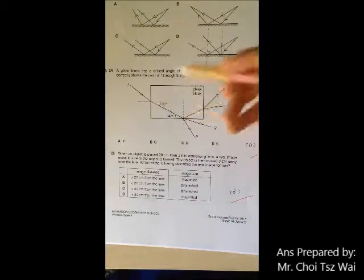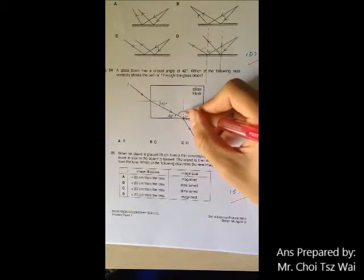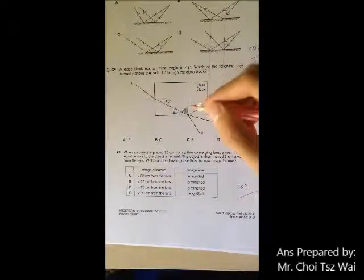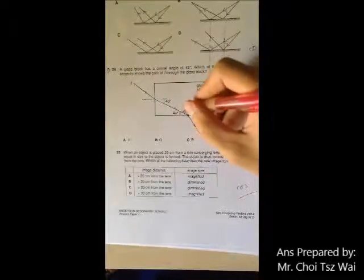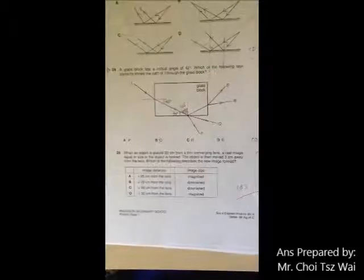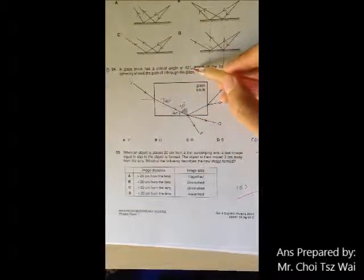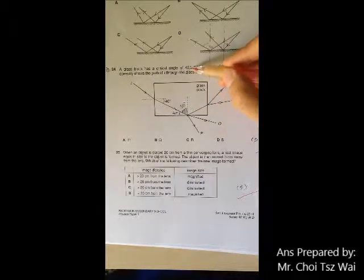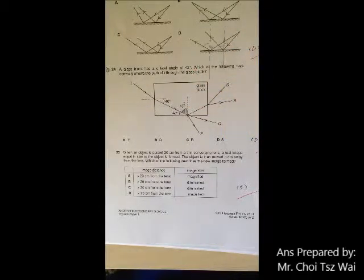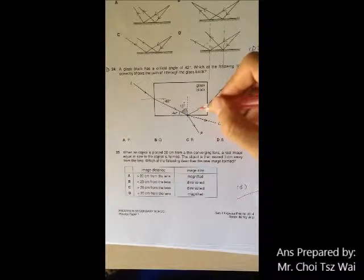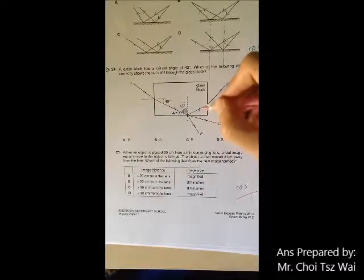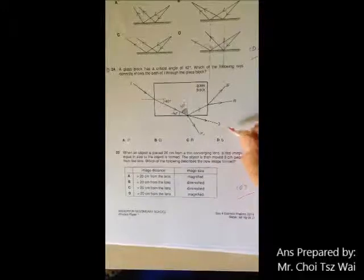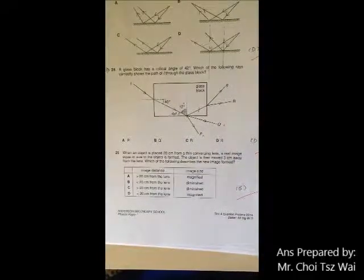The angle of incidence for this point would be from the ray to the normal. So in this case, the angle of incidence is 50 degrees, and definitely it is larger than your critical angle. So when the angle of incidence is larger than critical angle, total internal reflection will occur. So the light ray will actually go to this path. So P and Q is out.